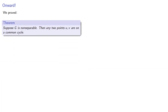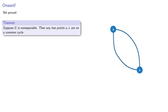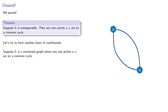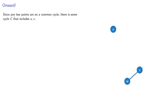In the previous lecture we proved that if g is non-separable, then any two points u and v are on a common cycle. Let's try to form another chain of conditionals. So let's start by supposing g is a connected graph where any two points u and v are on a common cycle. What if we have a point u and an edge vw? Since any two points are on a common cycle, there is some cycle c that includes u and v.